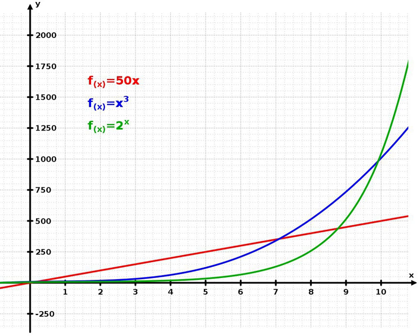In physics, avalanche breakdown within a dielectric material occurs when a free electron becomes sufficiently accelerated by an externally applied electrical field that it frees up additional electrons as it collides with atoms or molecules of the dielectric media. These secondary electrons also are accelerated, creating larger numbers of free electrons. The resulting exponential growth of electrons and ions may rapidly lead to complete dielectric breakdown of the material.